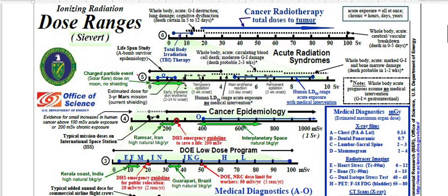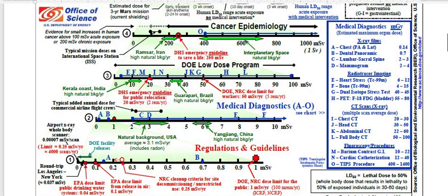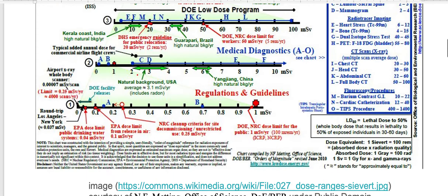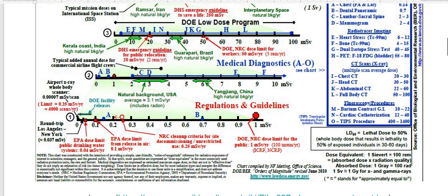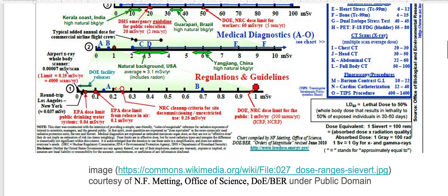Generally, dosages to human bodies are measured in millisieverts, or sometimes even in microsieverts. For example, if you went on a round-trip airplane flight from Los Angeles to New York, you would expect to receive 0.037 millisieverts of radiation.